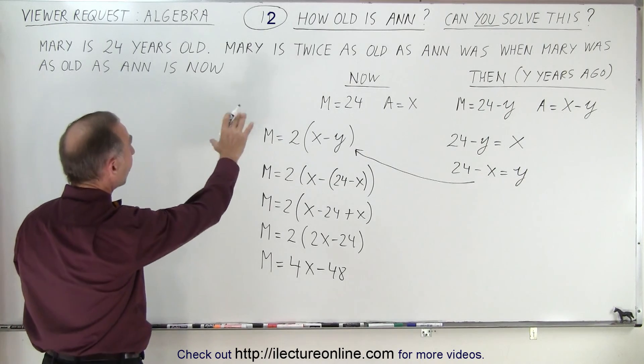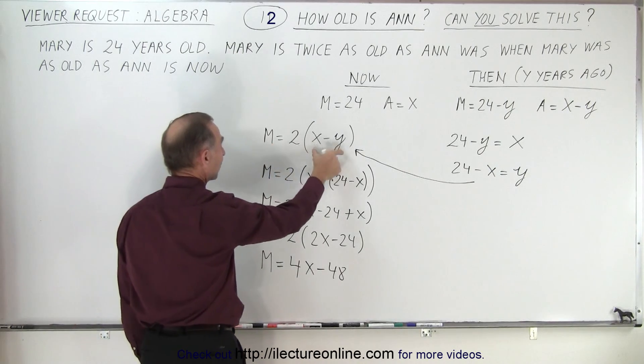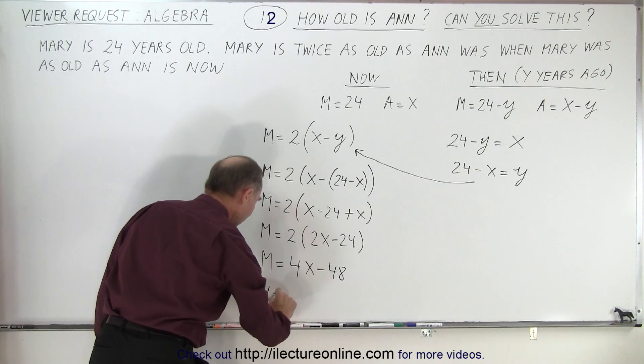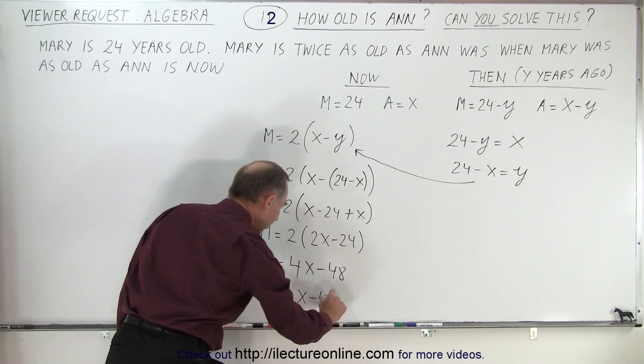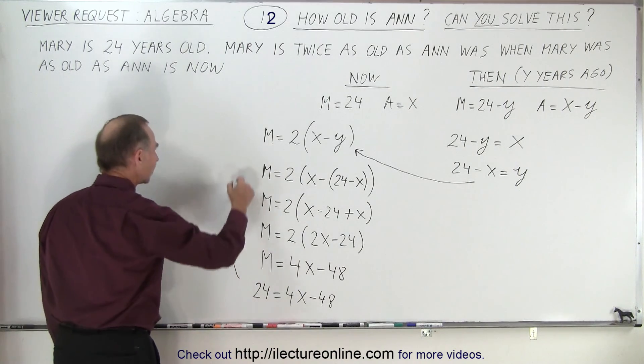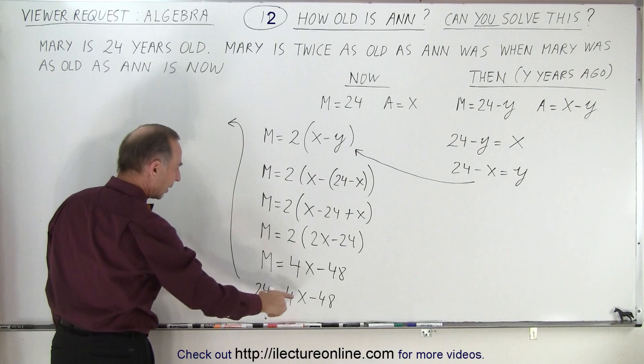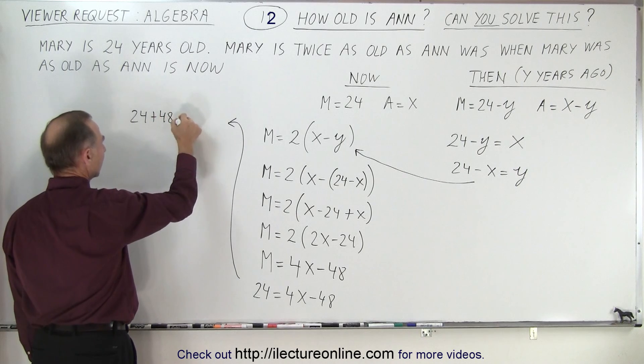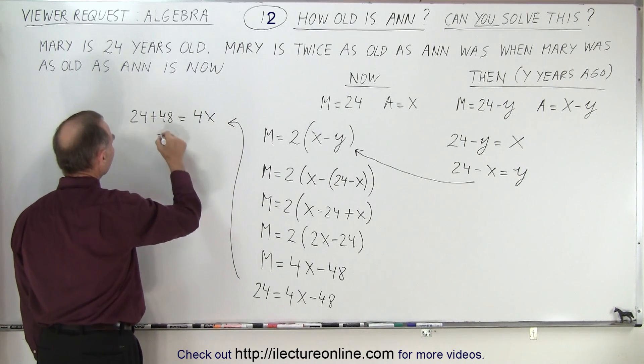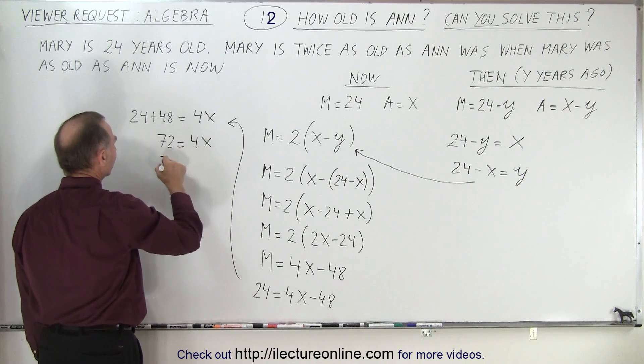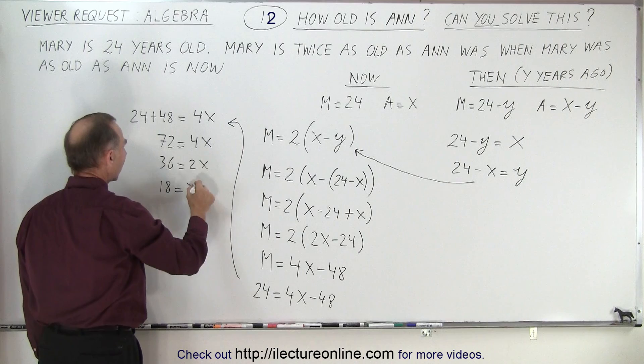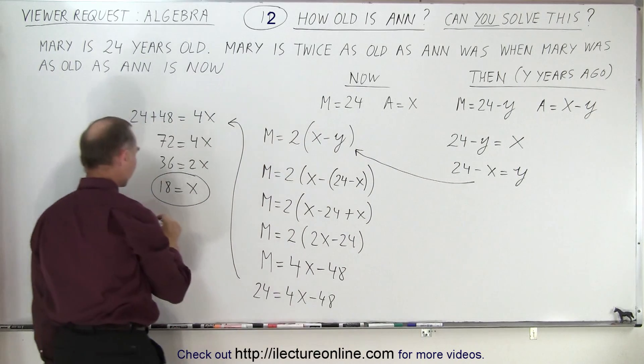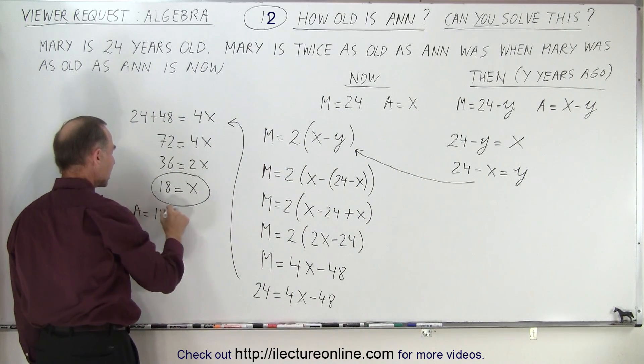So Mary is twice as old as Anne was back then. Mary's age is 24 so we can now substitute. We have 24 equals 4X minus 48. So let's come over here and continue. Now we can say that I'll bring the 48 over here so we have 24 plus 48 is equal to 4X, and that is 72 equals 4X, that's 36 equals 2X, that's 18 equals X. And what does X represent? X represents Anne's age now, so therefore Anne is equal to 18 years old.